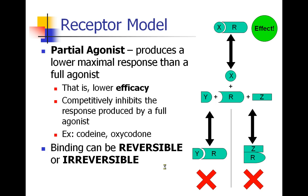Finally, a few last terms. A partial agonist produces a lower maximal response than a full agonist — that means it has lower efficacy. It's kind of like a competitive antagonist, but it has an effect. For example, if fentanyl is a full agonist, oxycodone is also an analgesic but no matter how much you give, it'll never be as good as fentanyl. In fact, it's kind of blocking fentanyl from doing its job by being in the way. So codeine, oxycodone — these are examples of partial agonists.